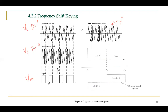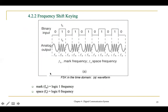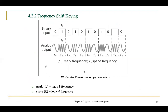So in FSK, when the modulating signal is 0,1,0,1, the output frequency changes: low frequency for logic 0, high frequency for logic 1, and so on, depending on the inputs.